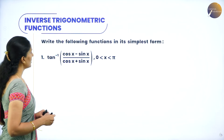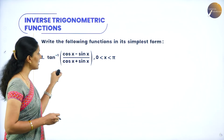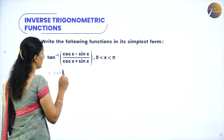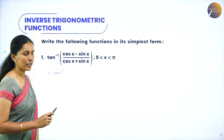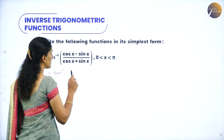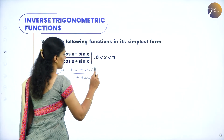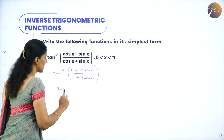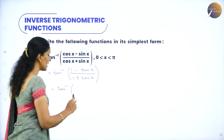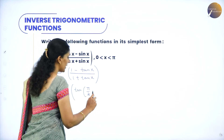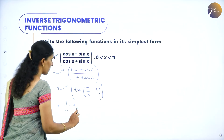Next: write the following function in its simplest form. We have tan inverse of (cos x - sin x)/(cos x + sin x). Divide both numerator and denominator by cos x, giving (1 - tan x)/(1 + tan x). Using the trigonometric identity, (1 - tan x)/(1 + tan x) equals tan(π/4 - x). So tan inverse of tan(π/4 - x) gives π/4 minus x.